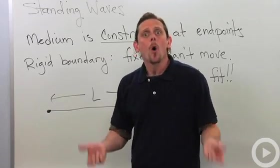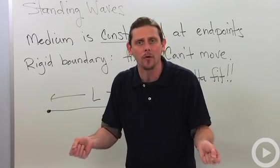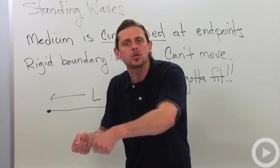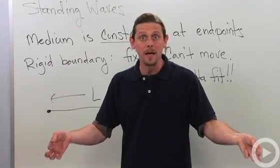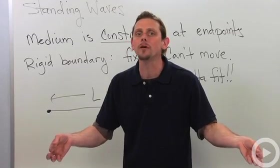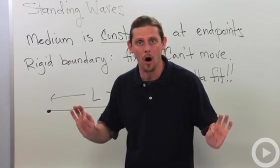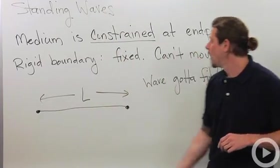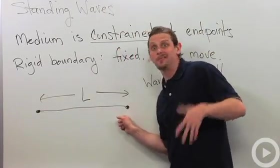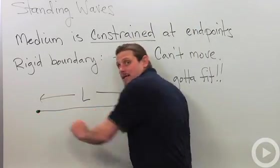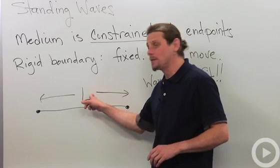At a rigid boundary we pin the boundary down, the medium down at the boundary so that it can't be disturbed. So the medium can be disturbed in between the two boundaries but the boundaries themselves got to remain where they are. So this is a rigid boundary, can't move. So let's consider a string like a violin or a guitar string that has rigid boundaries at both ends and has length L.